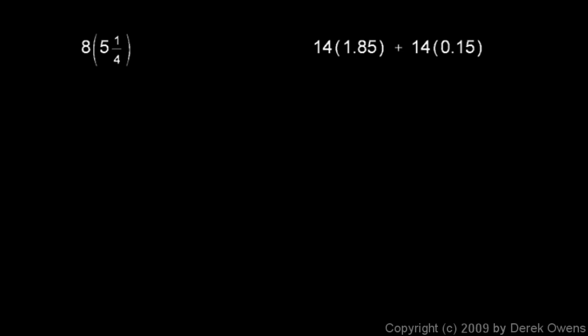Here's a couple of other examples. 8 times 5 and 1 quarter. This could be thought of as 8 times 5 plus 1 quarter. And that would be 8 times 5 plus 8 times 1 fourth. And 8 times 5 is 40, and 8 times 1 fourth is 2. And 40 plus 2 is obviously 42.